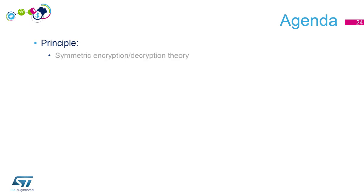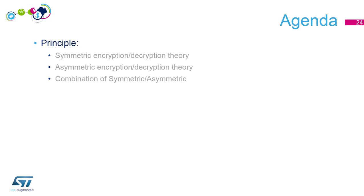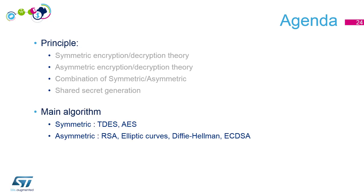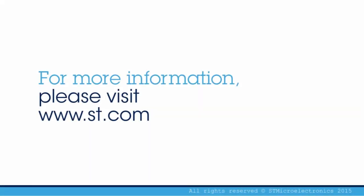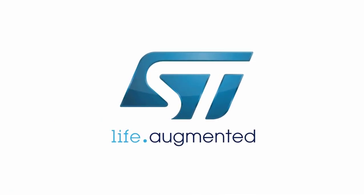Where do we stand now? Let's check the agenda. The principles we have seen: symmetric encryption/decryption — you use the same key to encrypt and decrypt; asymmetric encryption/decryption — you use the public key of the recipient to encrypt and the recipient uses the private key to decrypt. Then we can combine both: we can send large encrypted data efficiently, or we can generate a shared secret thanks to Diffie-Hellman and then use symmetric encryption/decryption. Now we will see the main algorithms. For symmetric, we will address 3DES and AES. For asymmetric, we will see RSA, elliptic curves, Diffie-Hellman, and ECDSA — which is Diffie-Hellman associated with elliptic curves.